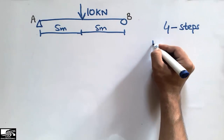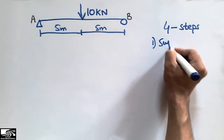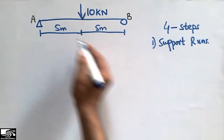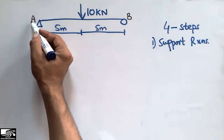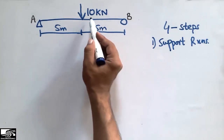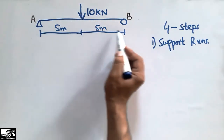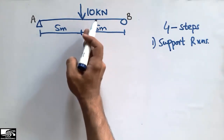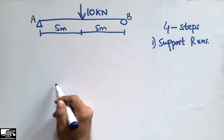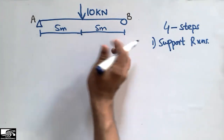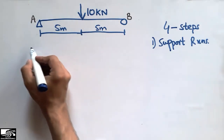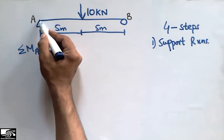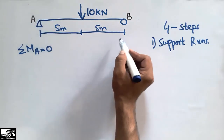The first step is to find the support reactions. Consider this is point A and this is point B, having a load of 10 kilonewton acting at the center of this beam having a length of 5 meter on the left side of the load and 5 meter on the right side of the load. So the total length of the beam is 10 meter.